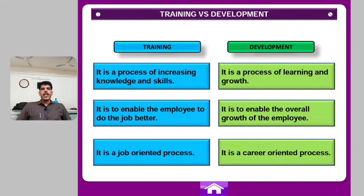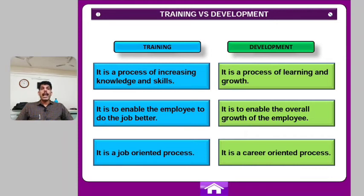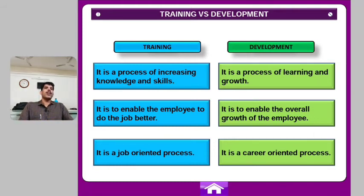Training is a job-oriented process. Development is a career-oriented process. It is the career-oriented process that we develop over time — a life-long process developed in a career-oriented way.